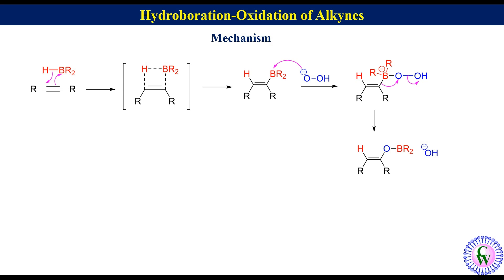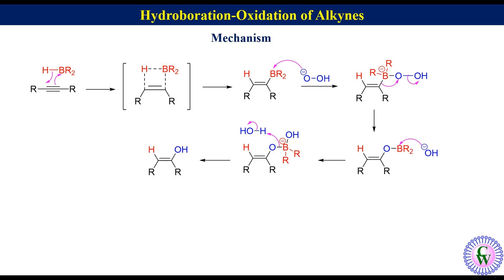Transfer of an electron pair from hydroxide ion to boron of alkenyl borane gives alkenyl borate, which undergoes hydrolysis to produce enol, which tautomerizes to its more stable keto form.